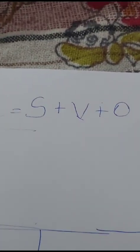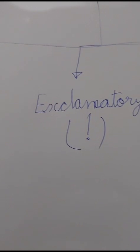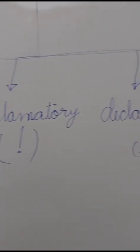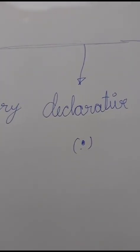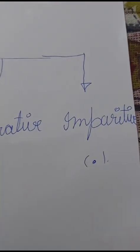The S stands for subject, V stands for verb, and O stands for object. There are mainly four types of sentences. Let's see what are the four types: interrogative, exclamatory, declarative, and the last one is imperative.